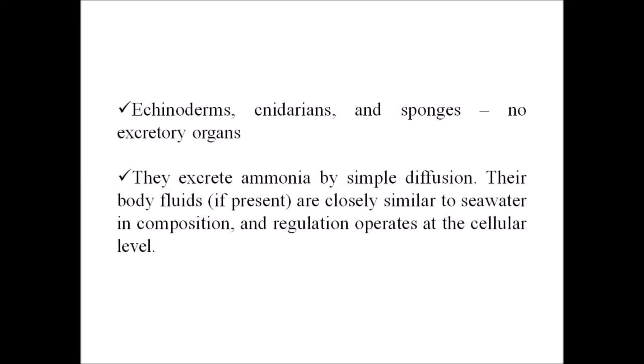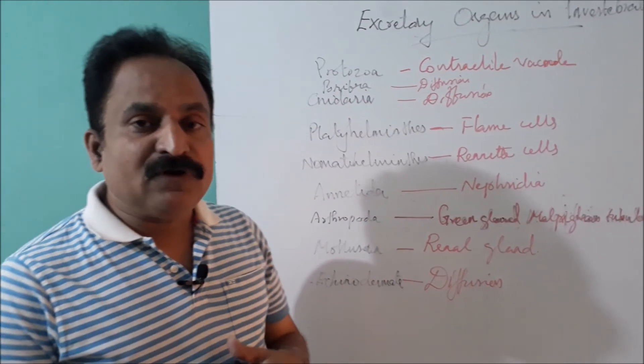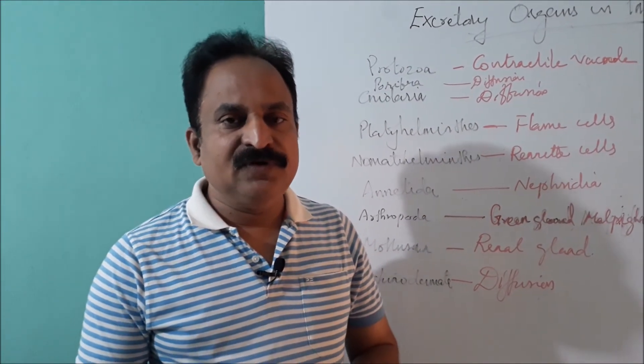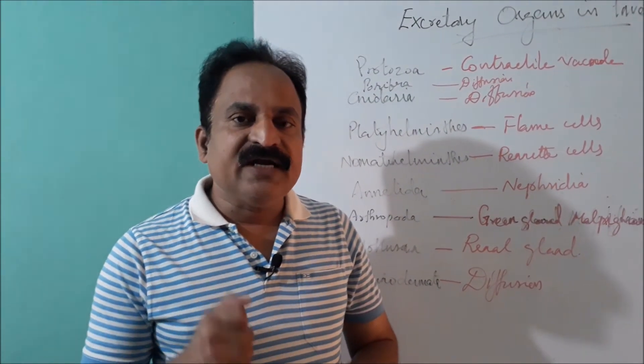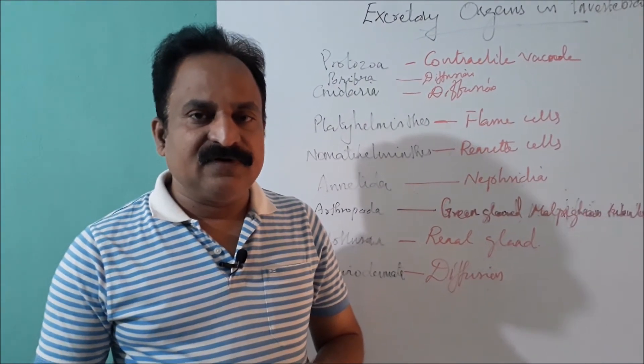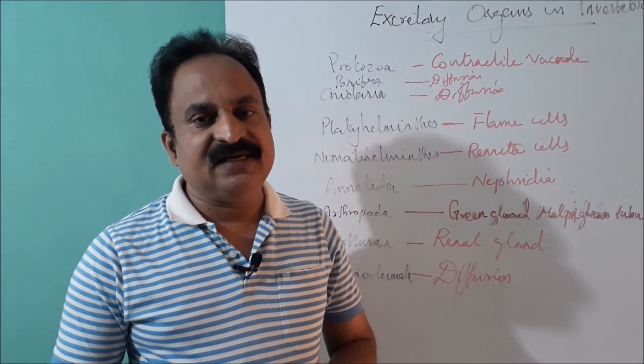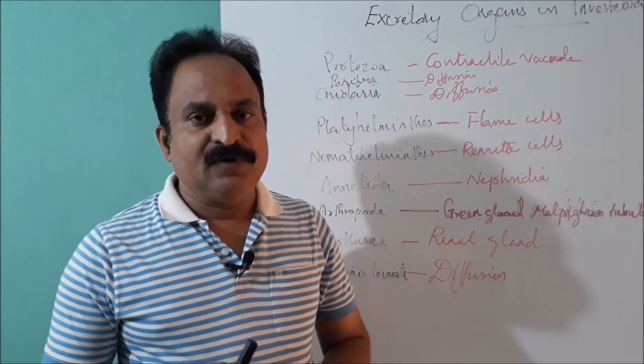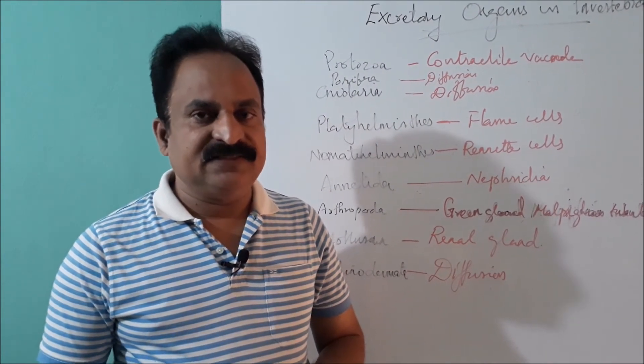Their body fluids, if present, are closely similar to sea water in composition, and regulation operates at the cellular level. In Protozoa, the excretory organ is the contractile vacuole, which helps in the process of excretion and osmoregulation in protists or protozoans.